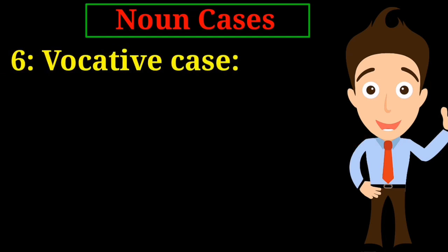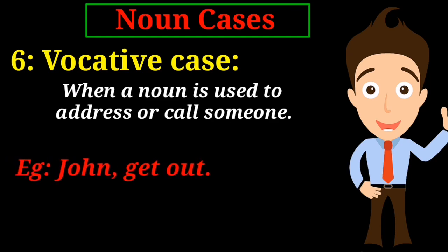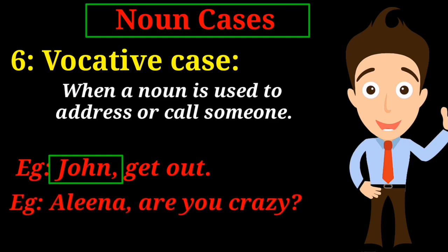Vocative case. When a noun is used to address or call someone, it is called the vocative case of a noun. For example, 'John, get out.' Here the noun John is used as an address, so it is the vocative case. Another example: 'Alina, are you crazy?' Here again, Alina is addressed, so it is the vocative case of a noun.